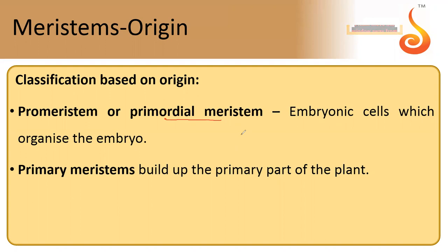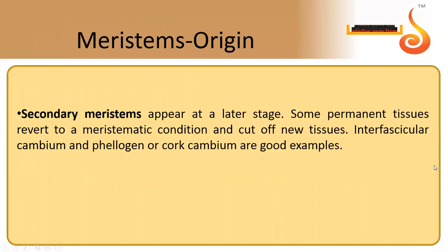The second type is primary meristems, which are derived from pro meristems. Primary meristems give rise to the initiation of root and shoot. The third type is secondary meristems — those which become meristematic in later stages. A permanent tissue that has taken up a defined shape and structure will come back to meristematic life; those cells are called secondary meristems. This generally appears at a later stage and is one of the best examples of secondary growth.